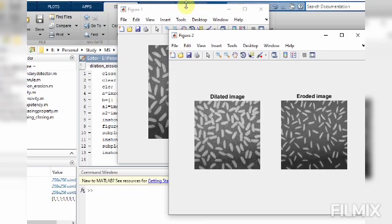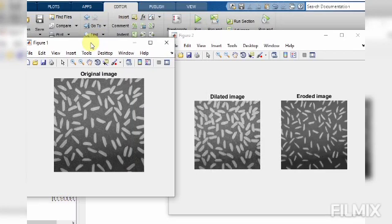So here we have the input image and this is the dilated image and eroded image. Normally, morphological dilation fills small gaps and morphological erosion removes islands and small objects so that only substantive objects remain. Thank you.